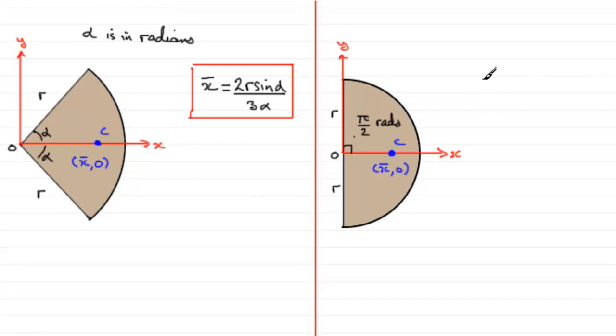So x-bar is going to equal twice the radius multiplied by the sine of alpha, pi upon 2 in this case. And then we divide that all by 3 times alpha, 3 times pi upon 2.